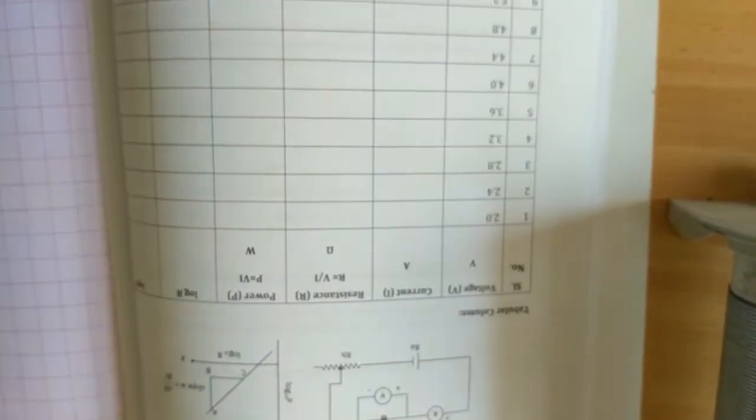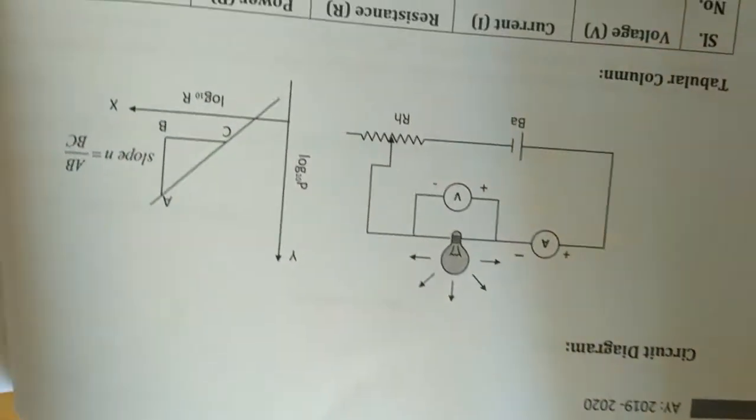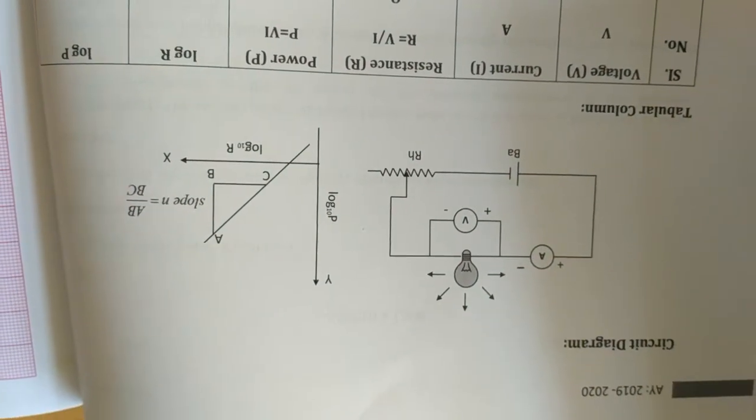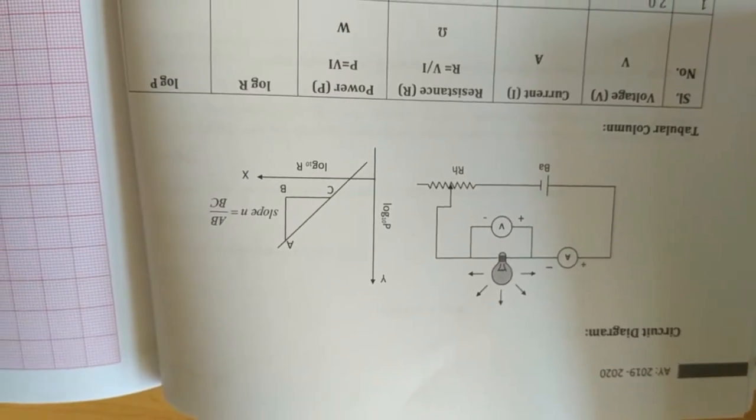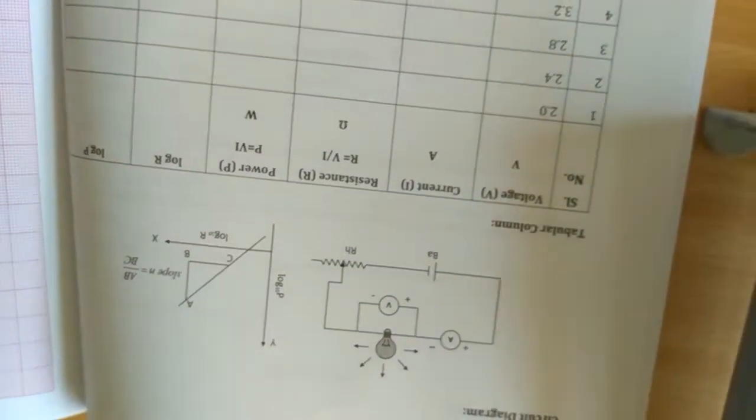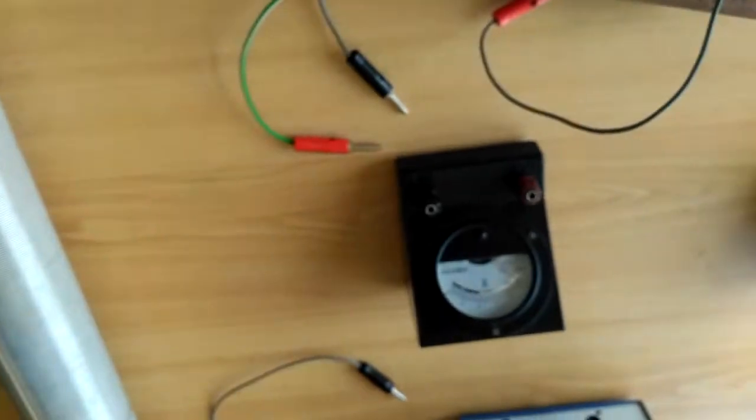Therefore we can calculate the power and resistance. We can plot a graph of log P versus log R. The slope should be equal to 4, which verifies Stephen's law. Now we will connect the circuit.